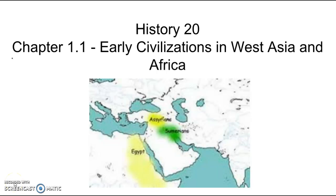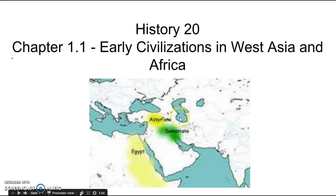Hey class, it's Mr. Clark here, and we're going to discuss chapter 1.1, Early Civilizations in West Asia and Africa. Here's a map showing you the regions that are going to be discussed here.